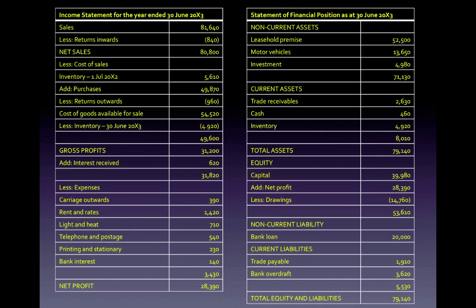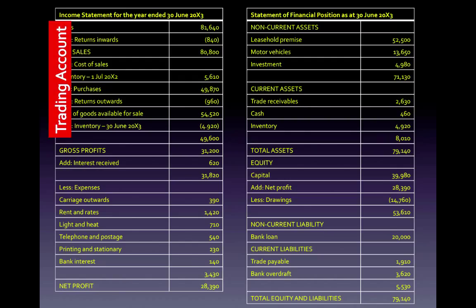From the trial balance, I have extracted the items that make up the income statement. We start off with sales and then minus return inwards to give you net sales, and then less cost of sales. Cost of sales is an expense relating to the goods that you have bought to sell — how much were the cost of goods that you had sold? You arrive at that by taking your opening inventory plus purchases less your closing inventory, which gives you your cost of sales of 49,600. Taking net sales less cost of sales gives you your gross profit. That section of the income statement is called the trading account.